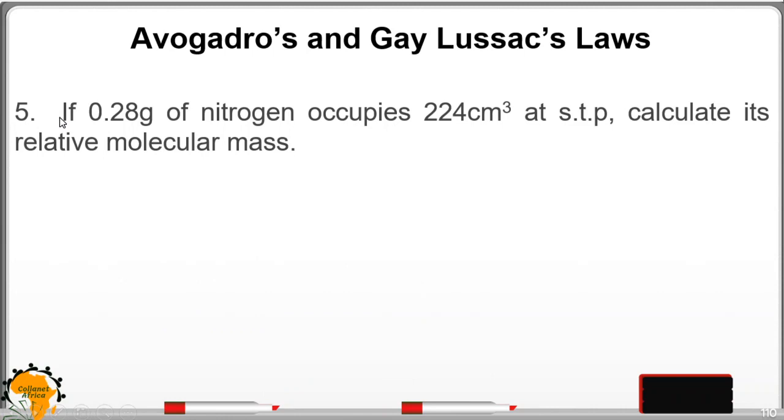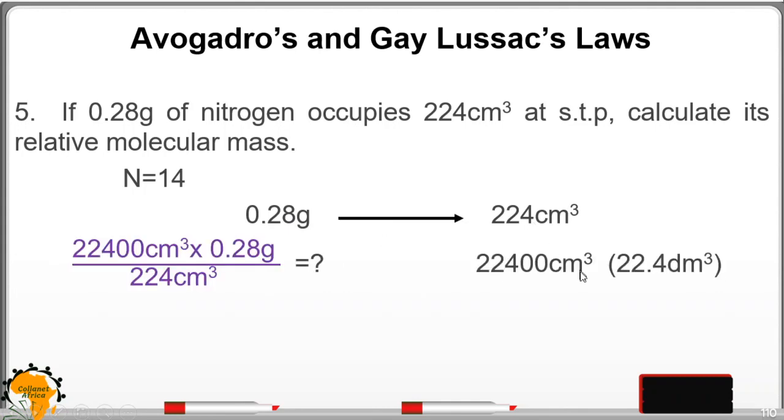In example 5, if 0.28 grams of nitrogen occupies 224 cm³ at STP, calculate its relative molecular mass, nitrogen 14. 0.28 grams occupies that at STP, so what about in 22.4 dm³, which is 22,400 cm³? We cross multiply to get the value of grams to be 28 grams of nitrogen. So that is the relative molecular mass.